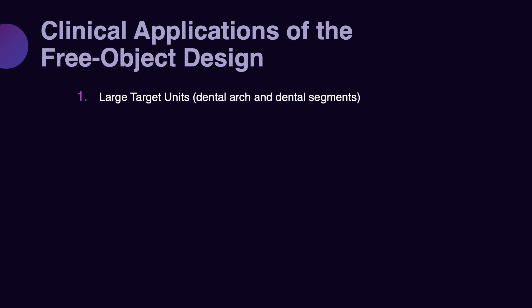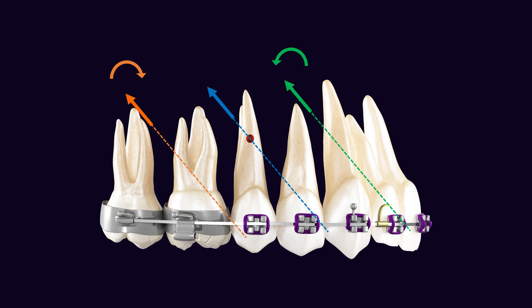All these characteristics make free object design a very desirable design, especially for the start of treatment. It does not need significant appliances and it does not need significant preparation. So what are the clinical indications for free object design? The most important indication is large targets like a dental arch or segment. If we want to move a large target, free object design allows us to apply a simple force and define the movement based on the relationship between the line of action and the center of resistance.